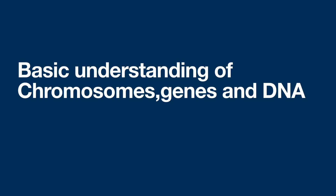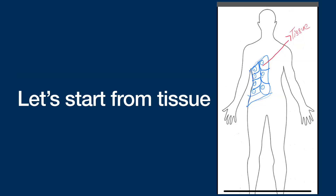Hi viewers, today's topic is basic understanding of chromosomes, genes and DNA. We can start from a tissue — this is the tissue which a human body is made up of. A tissue is made up of a group of cells which have similar structure and function together as a unit.